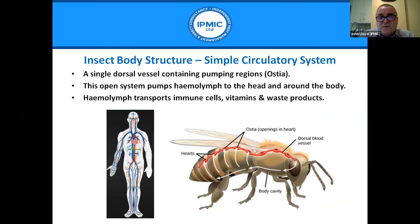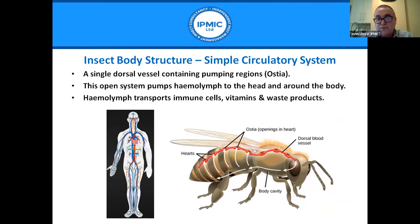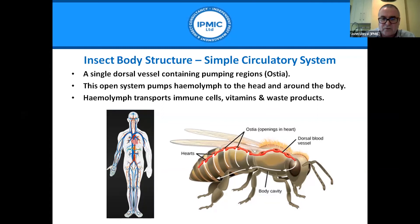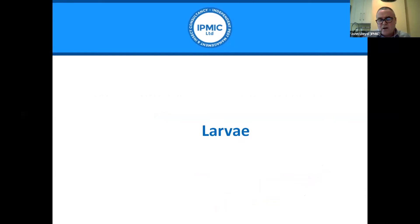Insects have a simple circulatory system — a single dorsal vessel passing along the top of the insect through abdomen, thorax, and head. It contains a series of simple pumping regions called ostea. This open circulatory system pumps hemolymph toward the head and it gradually travels around the body. Hemolymph transports immune cells, vitamins, and waste products. There is also a smaller element of oxygen in the blood, though oxygen delivery is mainly handled through the spiracles.